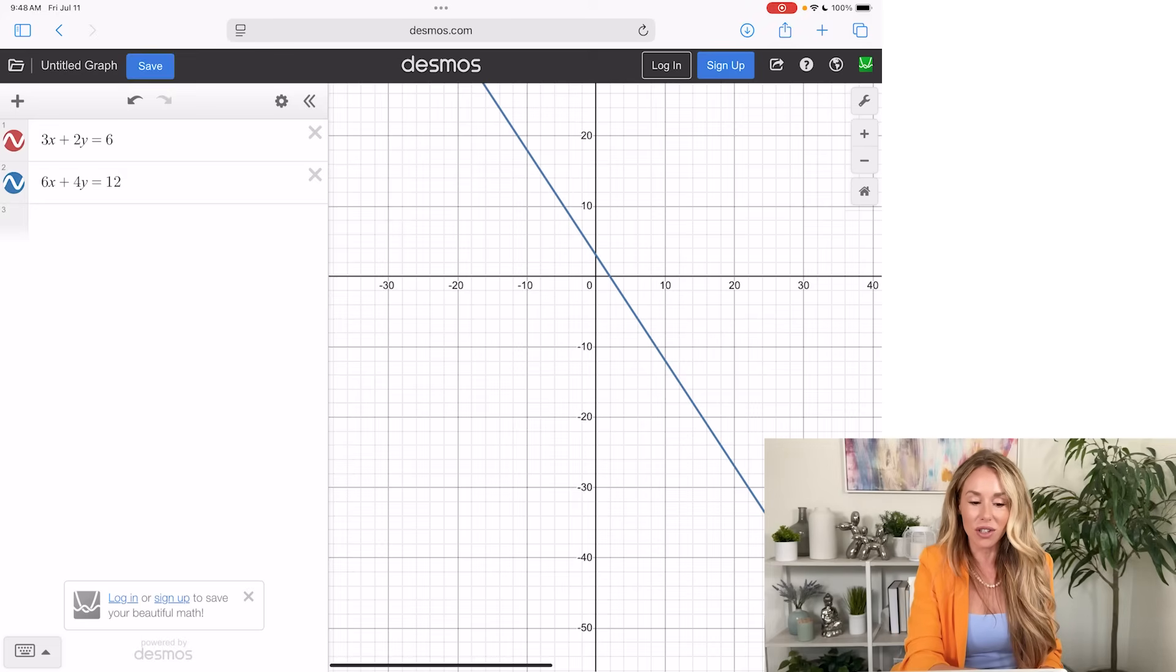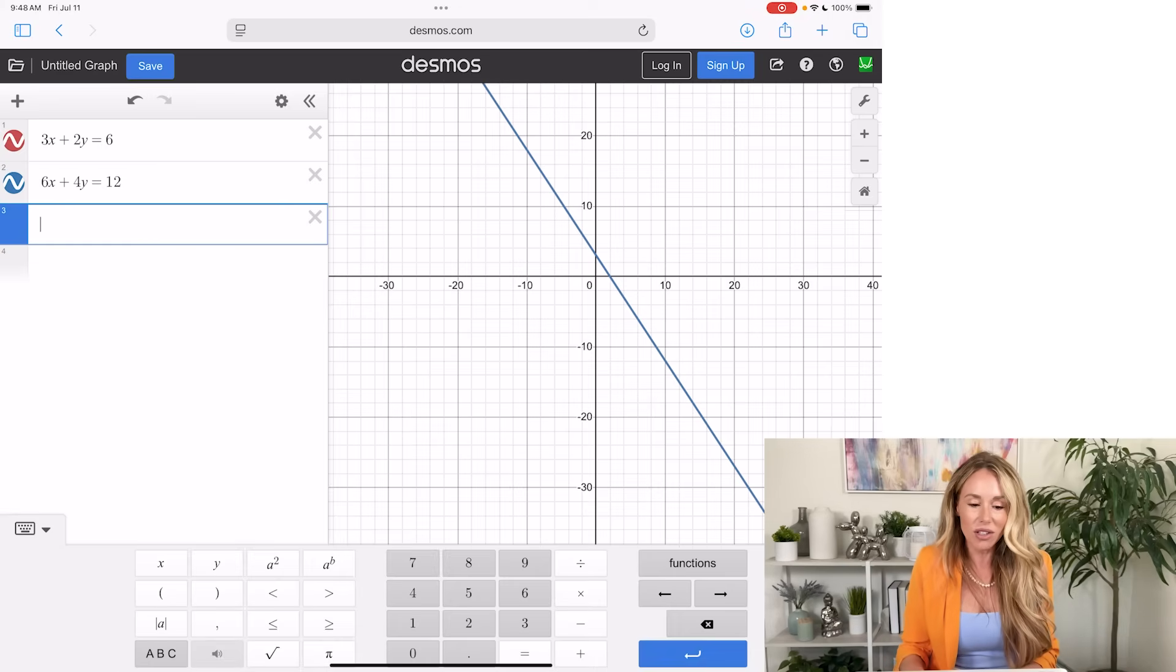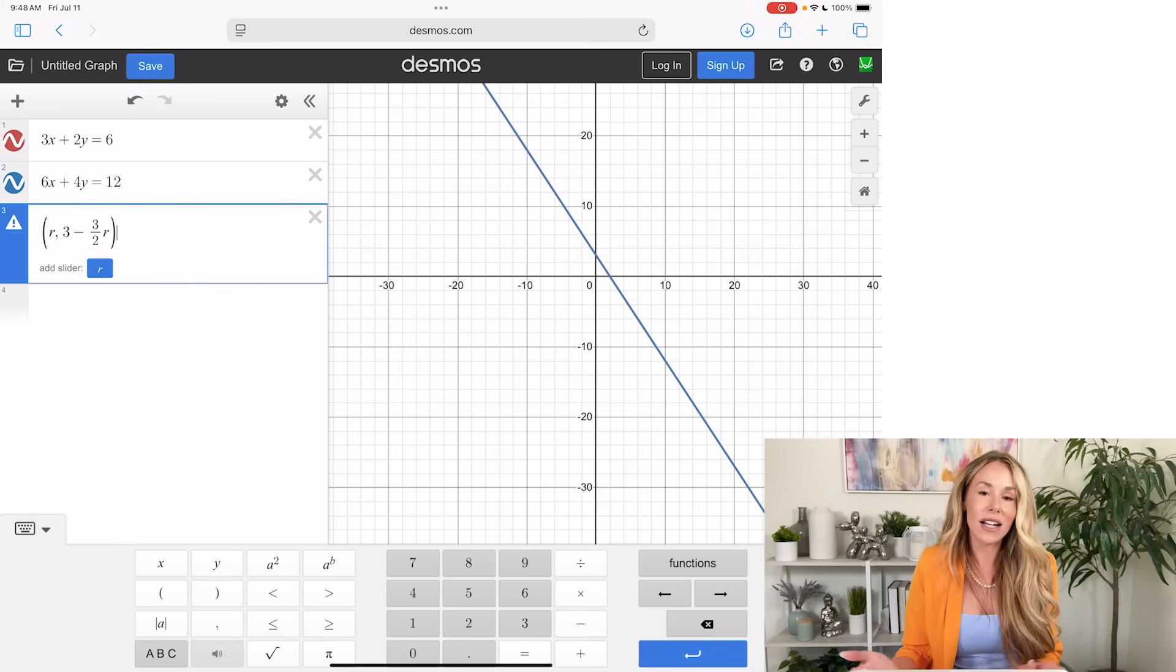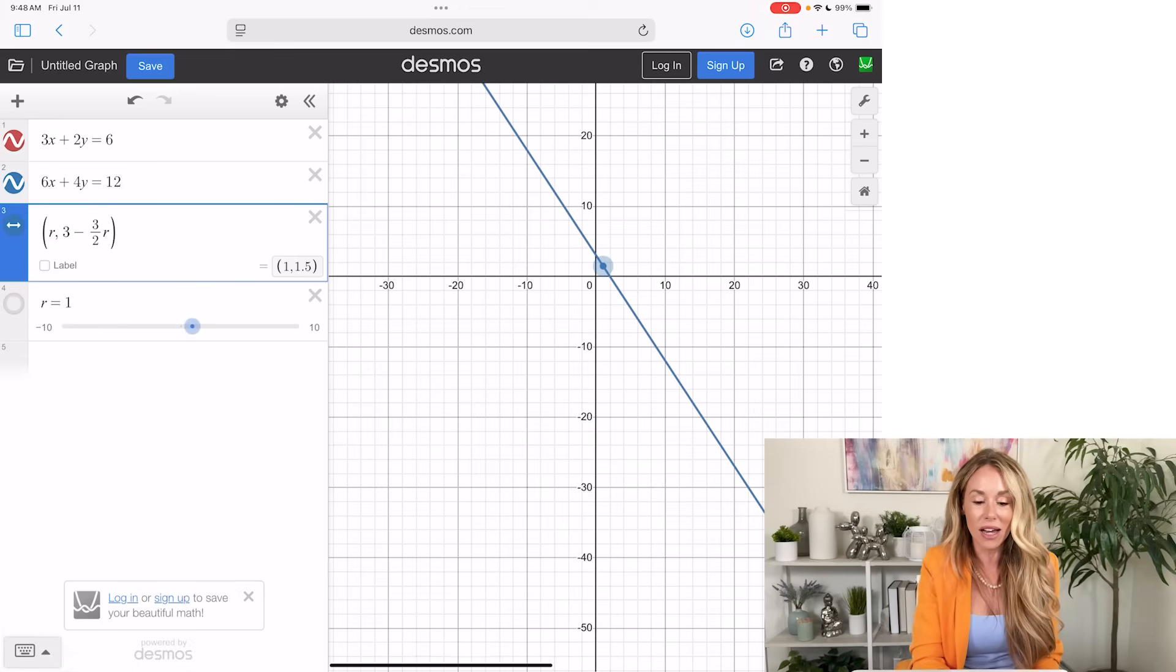And all you need to do is put the answer choices into Desmos to see which one runs along the entire line. So let me show you guys what I mean. As you can see, I already put both equations in here. If I remove the blue line, see how the red line is right underneath? That's because they're the same exact line. And then what I'm going to do is I'm going to test A. So on the next line, I'm going to put in R, 3 minus 3 halves R. And since it's not an X or a Y, it's going to ask you to add a slider. So go ahead and hit that. Then when you move the slider around, do you see how the dot goes straight up and down the entire line?